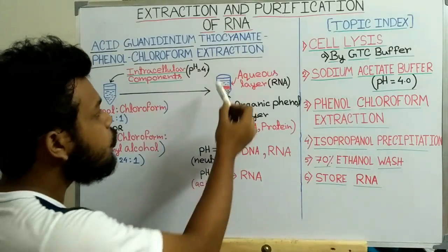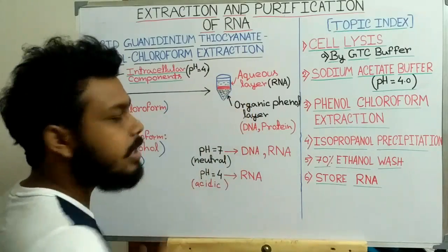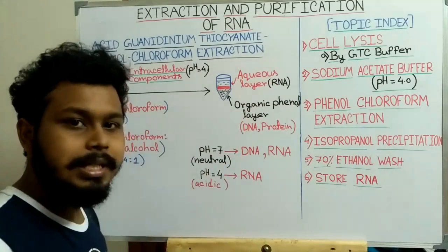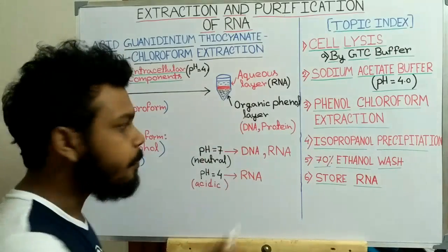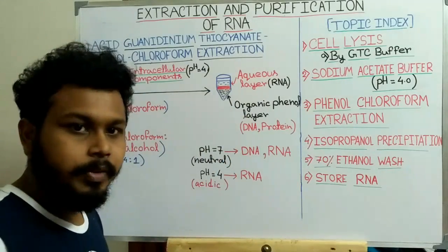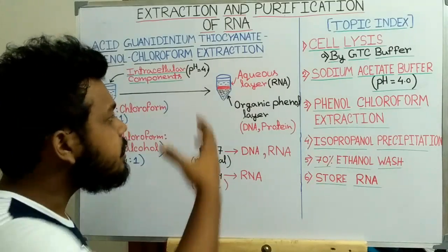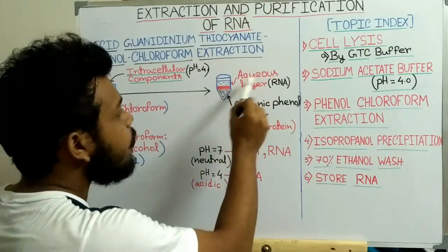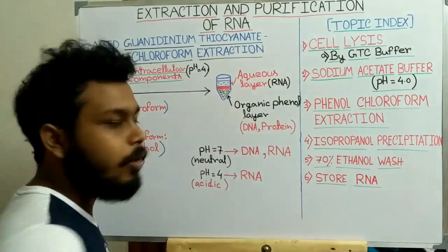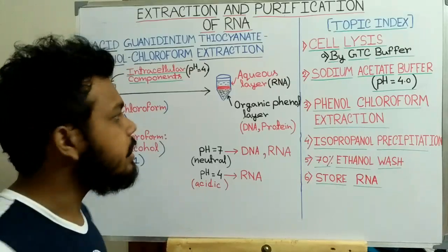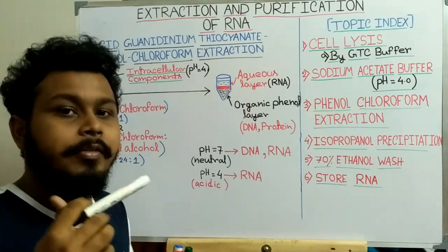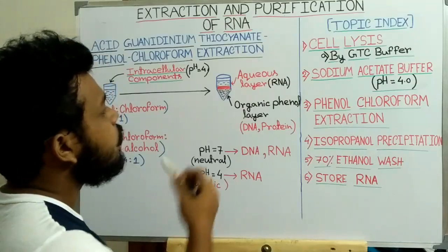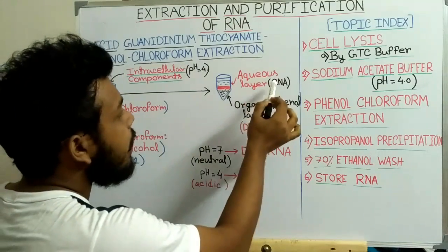After centrifugation, two separated layers are obtained. The upper layer is the aqueous layer, where RNA is present. The lower portion is the organic phenol layer, where DNA is present. Protein is present at the interface. This separation occurs because the aqueous layer is polar and phenol is a non-polar molecule, and phenol is also denser than the aqueous layer.